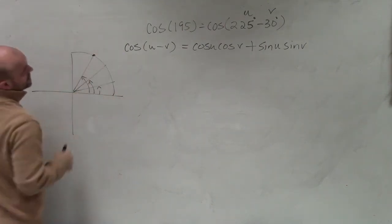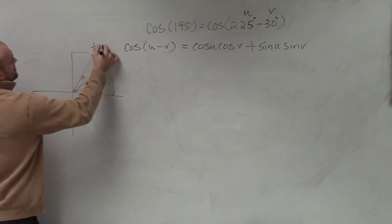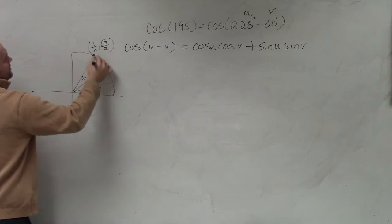So therefore, 30 degrees, that's 30 degrees. It's 1/2, comma, square root of 3 over 2, right?